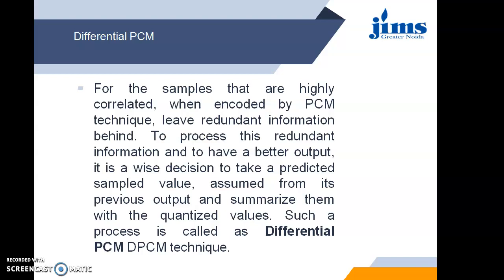In DPCM, close samples are highly correlated, meaning they have almost similar values and contain many redundant bits. For example, if a first sample has a code of 0110 and the next sample is 0111, the first three bits — 011 — are redundant. So instead of sending all four bits, we send only the difference between the two values, which provides bandwidth savings.